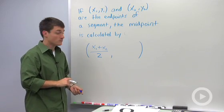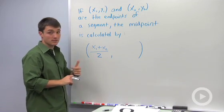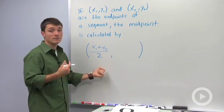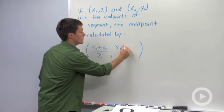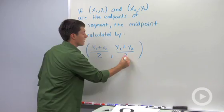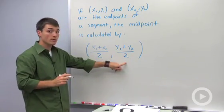So by adding together the x's and dividing in half, I can find the x-coordinate. Do the same thing for the y's. y1 plus y2 divided by two will give us the y-coordinate of our midpoint.